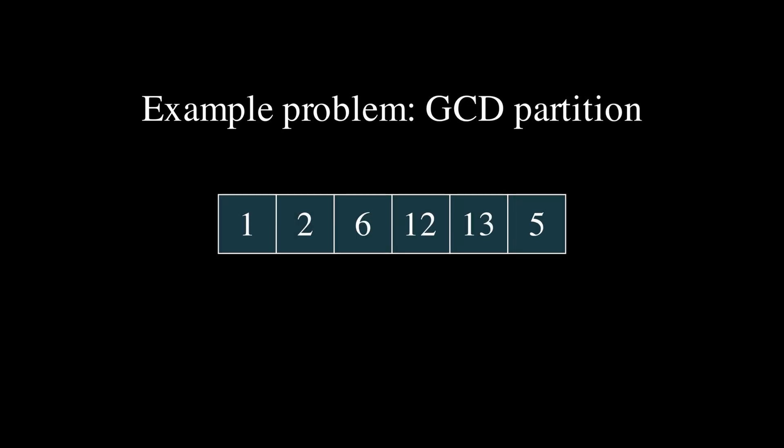For example, take this problem, GCD partition. The question tells us that we have an array of integers, and we can apply this operation once onto the array. This operation is we can take the array and split it into k different sections that are consecutive, and k is bigger than or equal to 2 and less than or equal to the number of elements. After we split it into these consecutive segments, we sum these segments and take the GCD of these sums. What is the maximum GCD that we can get?